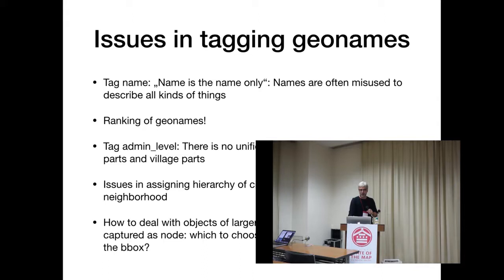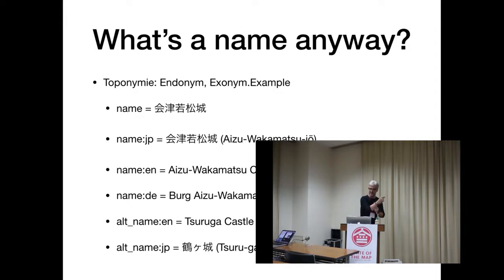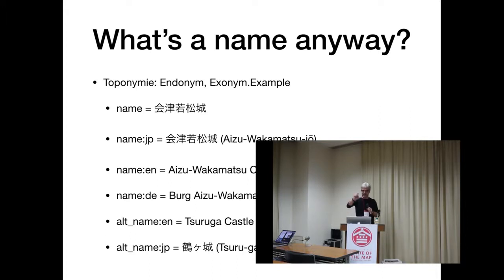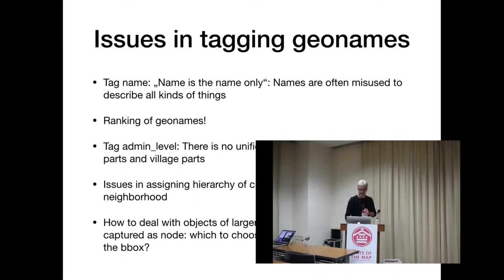Issues in tagging geonames: people think the name tag is like a remark or descriptive attribute — it is not. You should even avoid adding the word 'Castle' to the name because the object is already of type Castle. Only add such words if the place is officially named that way — for example, Hotel Washington is just named that; you don't add 'Hotel' to the name. A name is just a name only — that's how the OpenStreetMap wiki advises.